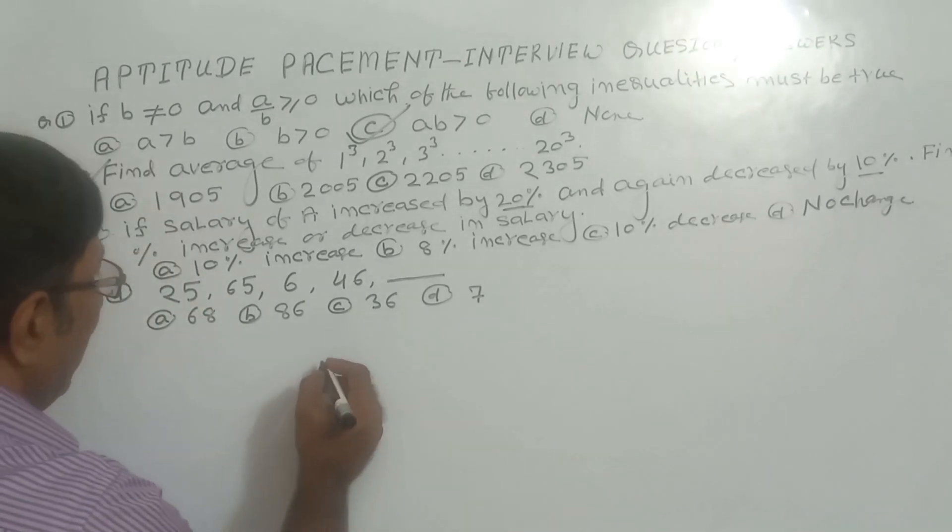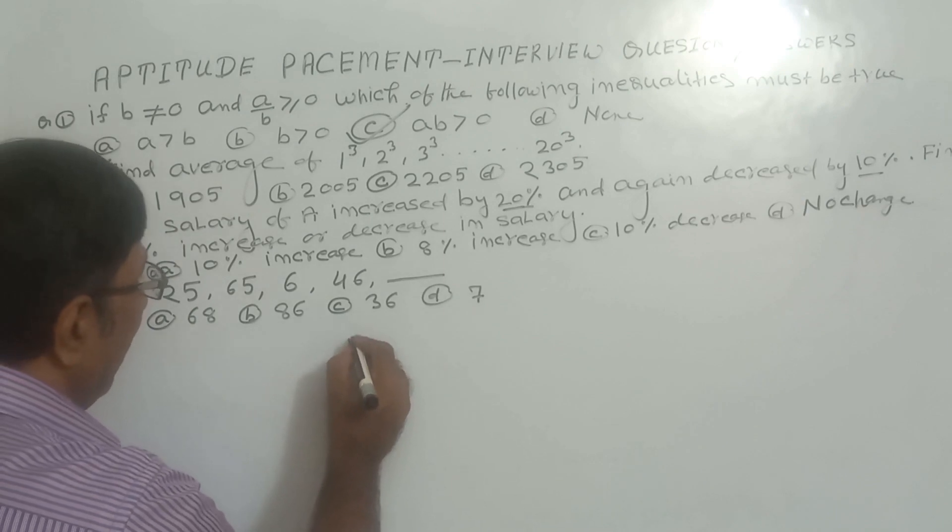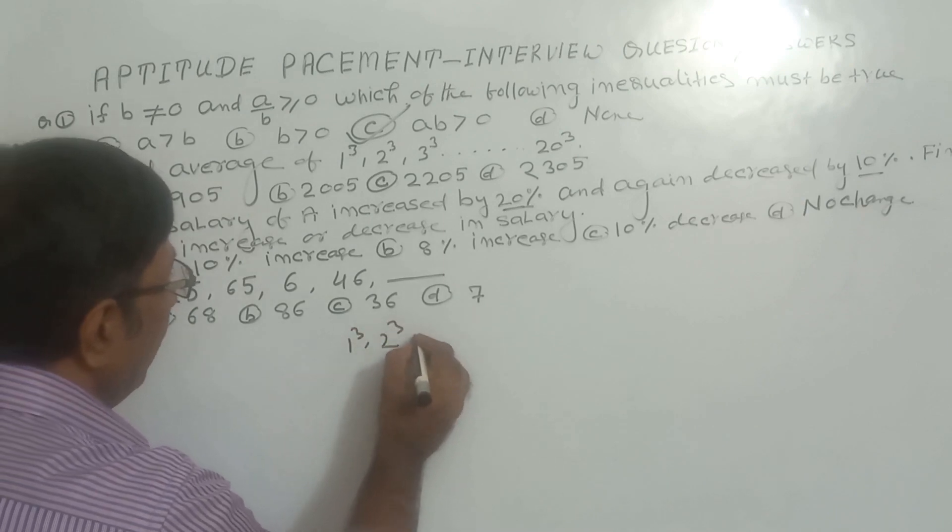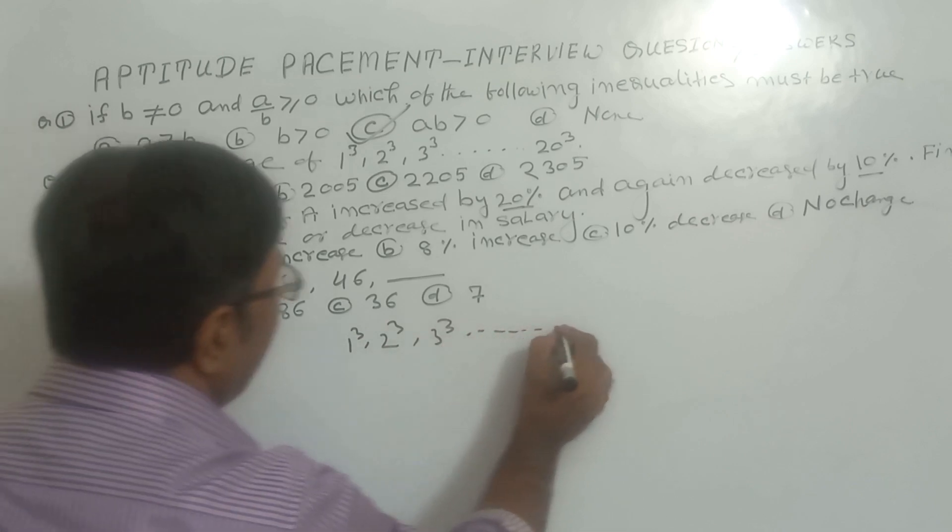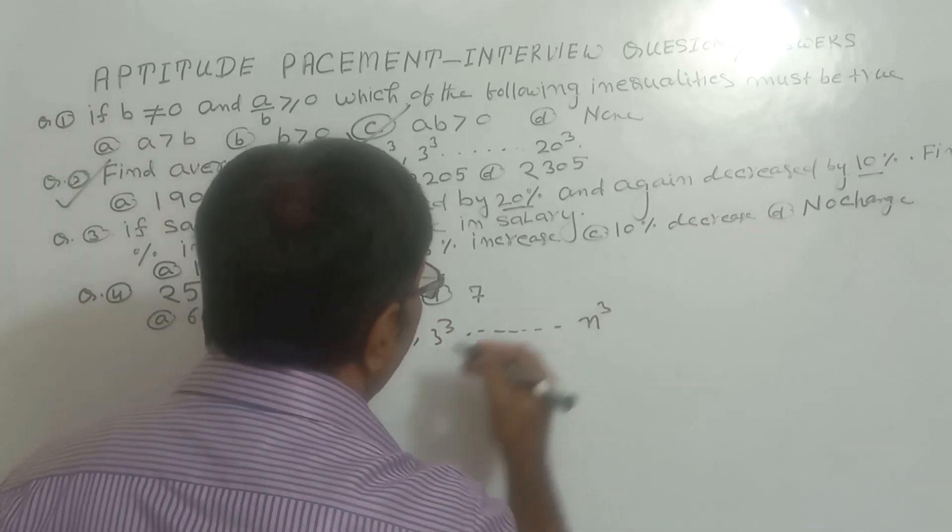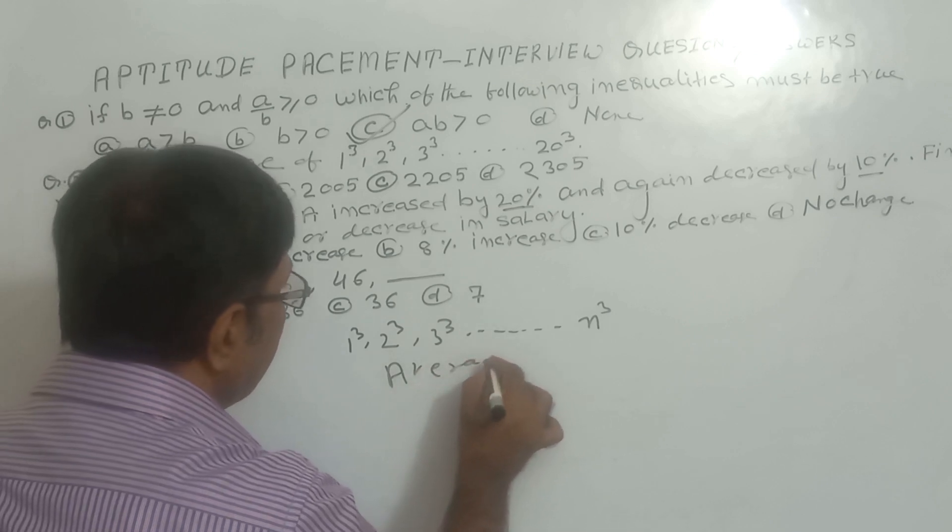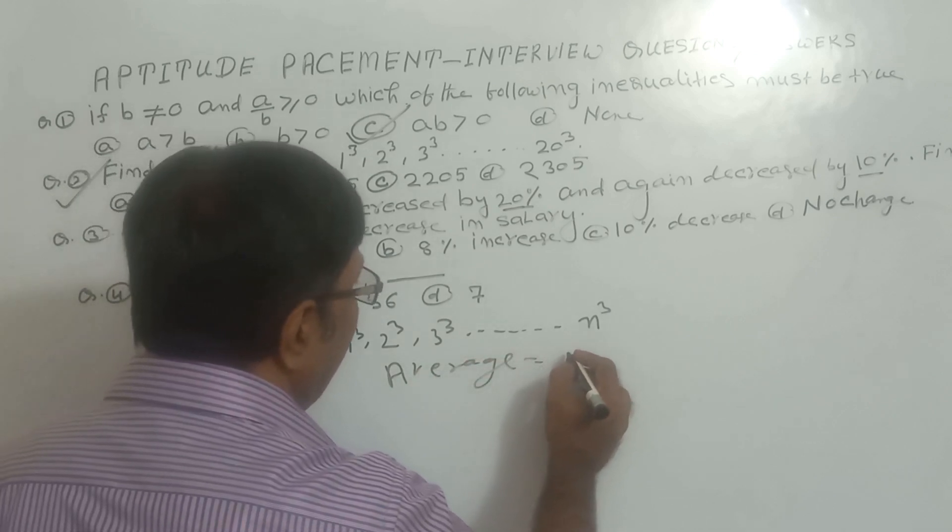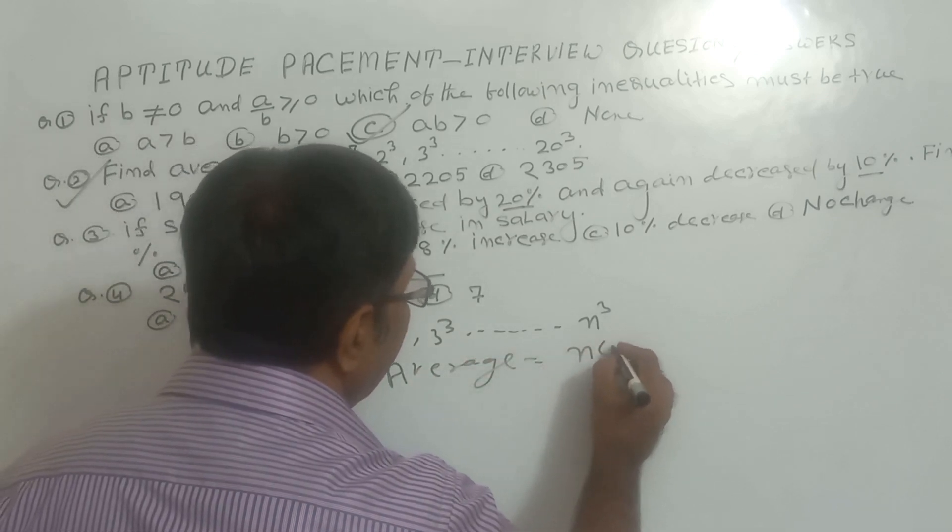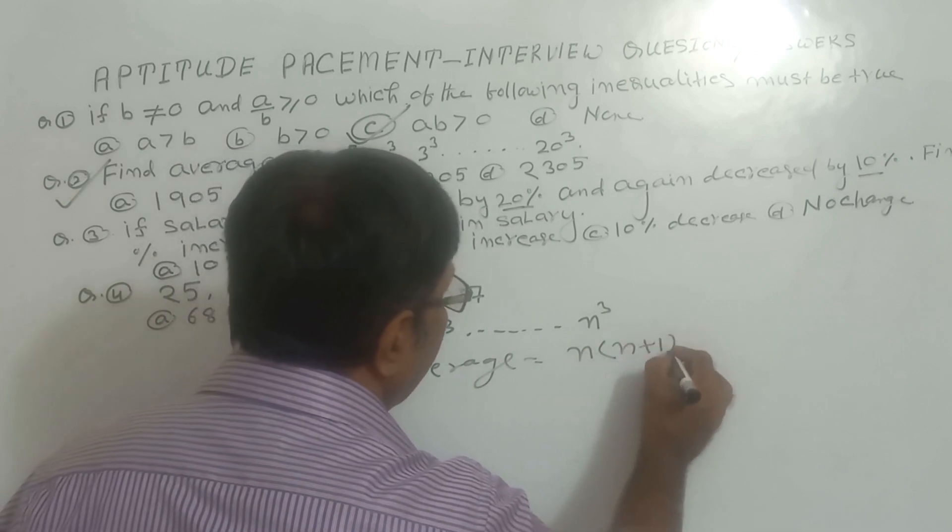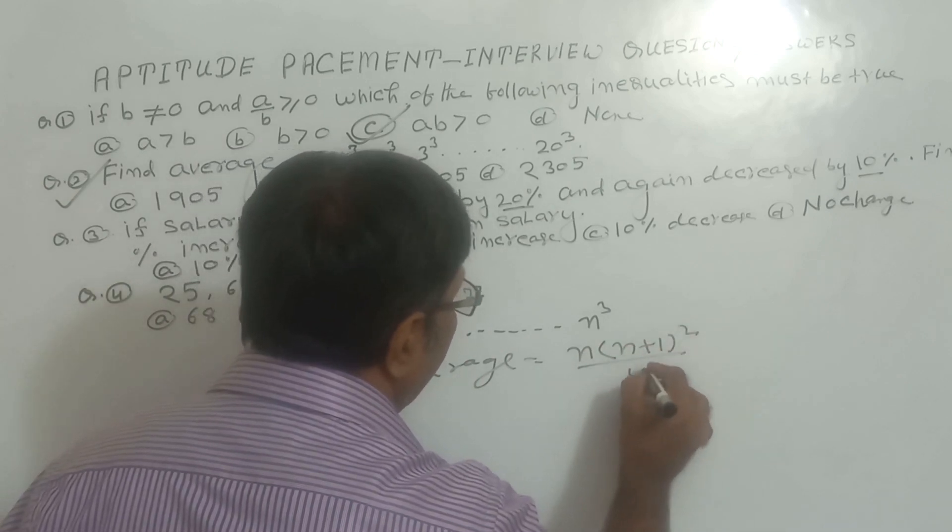So let us see. If there is a number 1Q, 2Q, 3Q up to NQ, then average of this number will be: average equals last number multiplied by next number squared and divided by 4.